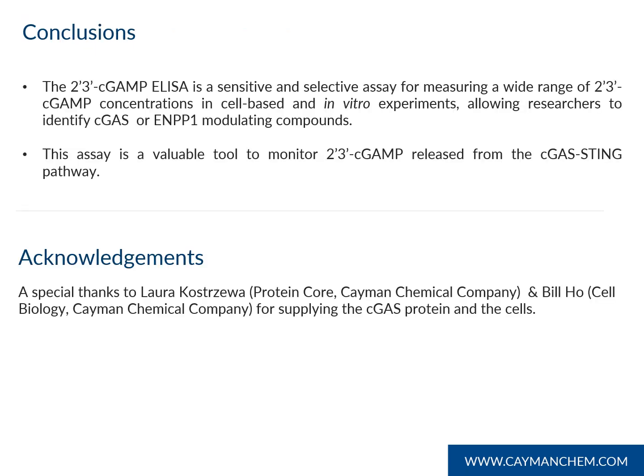To conclude, the 2-3 cGAMP ELISA is a sensitive and selective assay for measuring a wide range of 2-3 cGAMP concentrations in cell-based and in vitro experiments, allowing researchers to identify C-GAS or ENPP1 modulating compounds. This assay is a valuable tool to monitor 2-3 cGAMP released from the C-GAS STING pathway. I'd like to give a special thanks to Laura Kostrava and Bill Hull for supplying the C-GAS protein and the cells. Thank you for your attention.